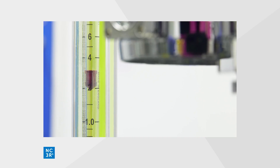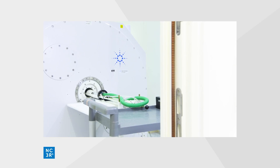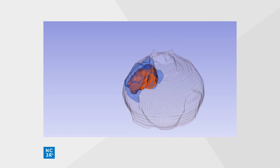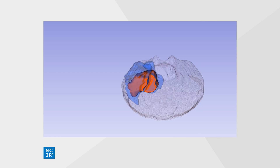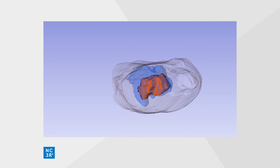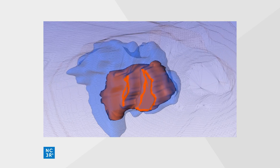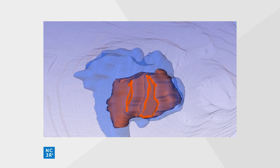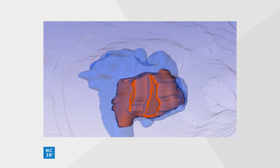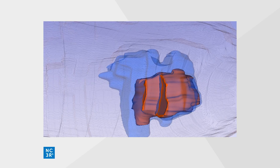Traditionally, we would measure lesion volume using post-mortem tissue and subsequent histological analysis. However, we've recently started to incorporate preclinical MRI scanning into our stroke studies. This enables us to measure the lesion volume in the stroke animals, but also enables those same animals to be included in behavioural studies. What this means, in effect, is that you can gain a lot more experimental data from the same animals.